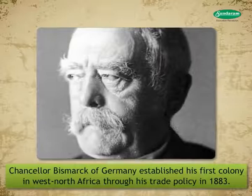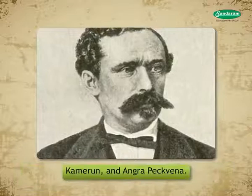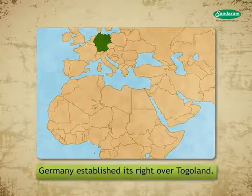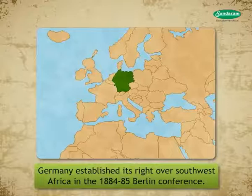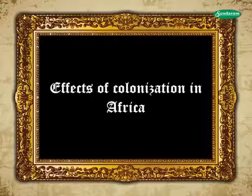German researcher Dr. Gustav Nachtigal was sent to establish German control over Togoland, Cameroon and Angra-Pekwina. Through the treaty of self-defense between Germany and the Negro King, Germany established its right over Togoland. Germany established its right over South-West Africa in the 1884-85 Berlin Conference.